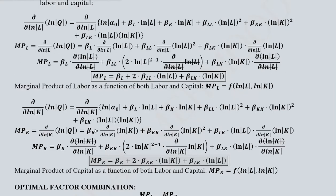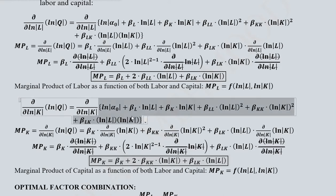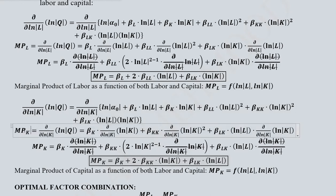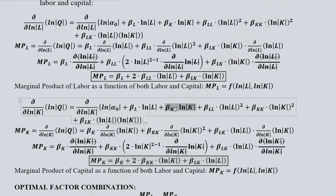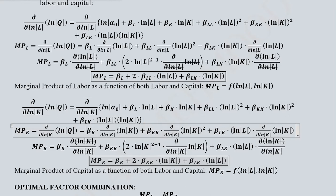Similar results are expected from the marginal product of capital. Here you can see the derivative is in its natural logarithmic form with respect to capital. This is the translog production function, the logarithmic derivative of which is taken with respect to capital — it will become the marginal product of capital. Once we take this derivative, the terms containing capital will have an effect: this term, that term, and finally this cross term. So when we take the derivatives, they will be respectively these corresponding expressions.